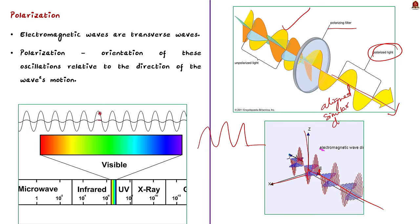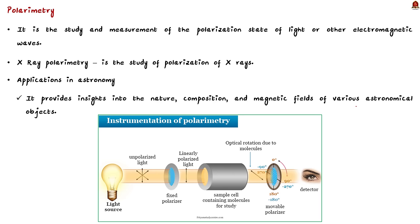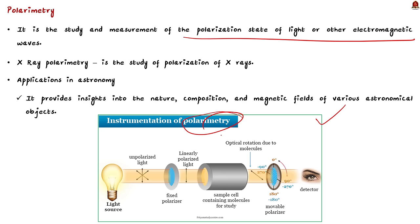Polarimetry involves the study and measurement of the polarization state of light or other electromagnetic waves. Each material interacts with polarized light in a very specific way. By passing polarized light through a sample and studying the change in polarization caused by the sample, we can understand the physical and chemical properties of that sample. If we study the polarization of X-rays instead of light waves, it is called X-ray polarimetry.